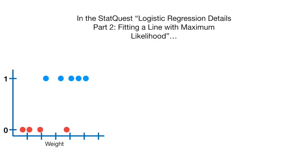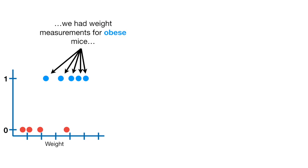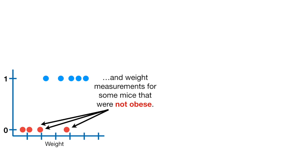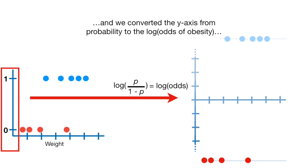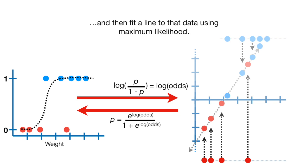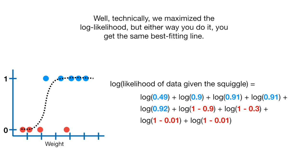In the StatQuest on logistic regression details part 2, fitting a line with maximum likelihood, we had weight measurements for obese mice and weight measurements for some mice that were not obese, and we converted the y-axis from probability to the log odds of obesity and then fit a line to that data using maximum likelihood. Technically we maximize the log likelihood, but either way you do it, you get the same best fitting line.